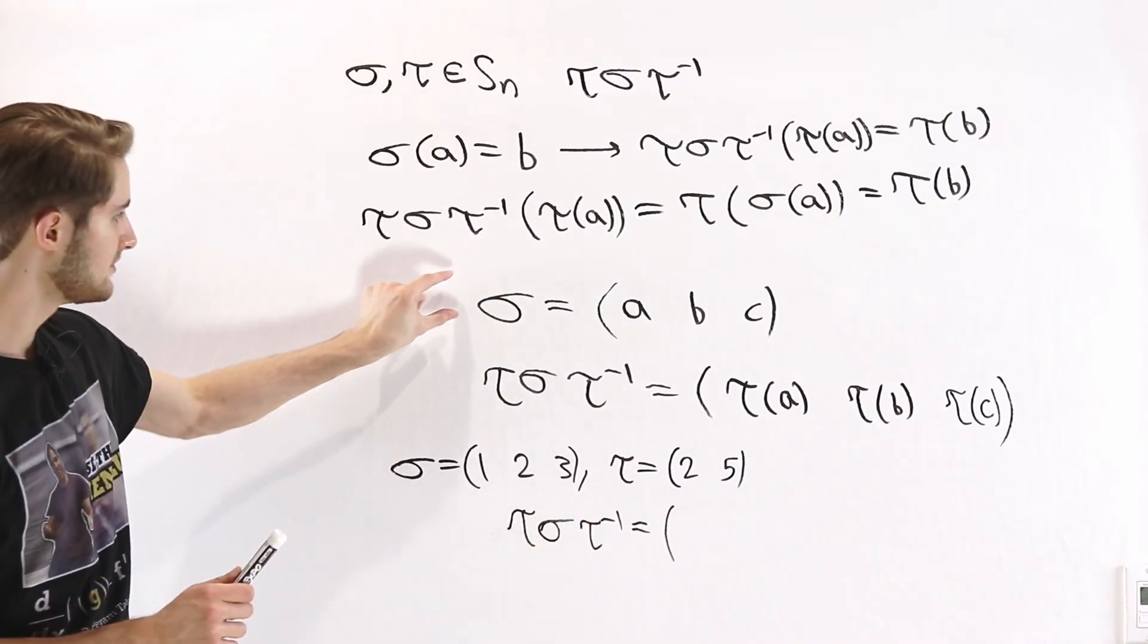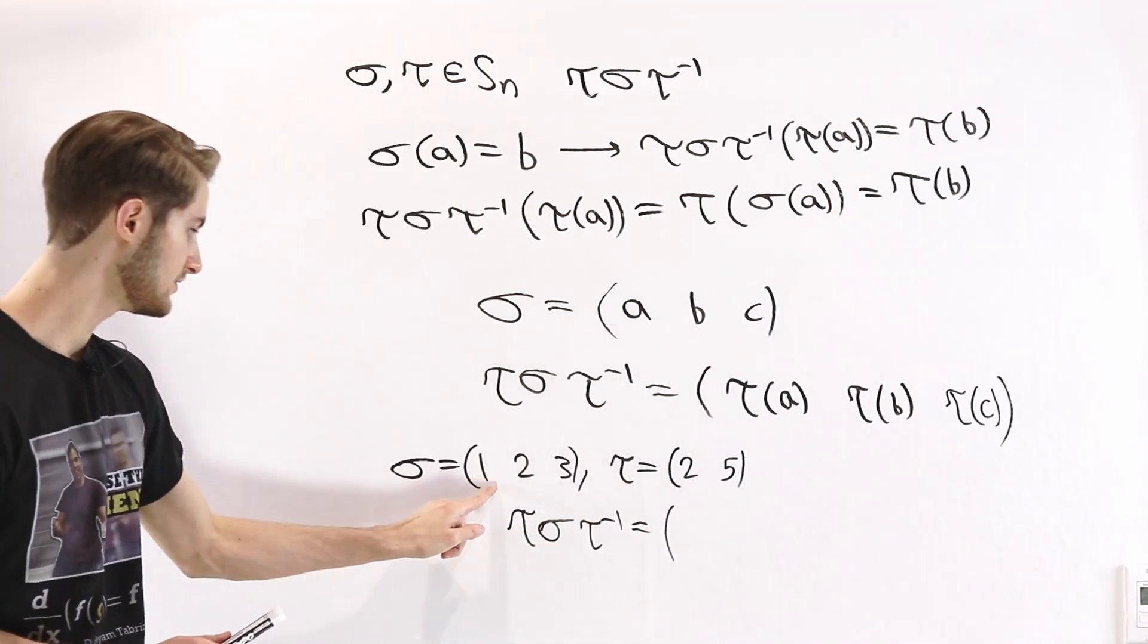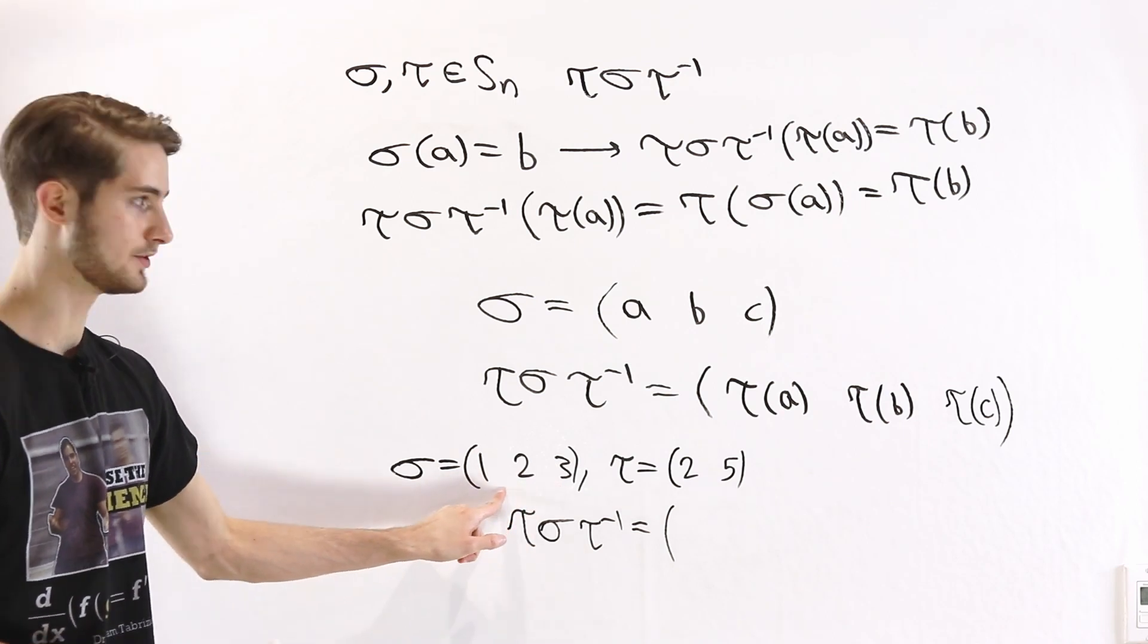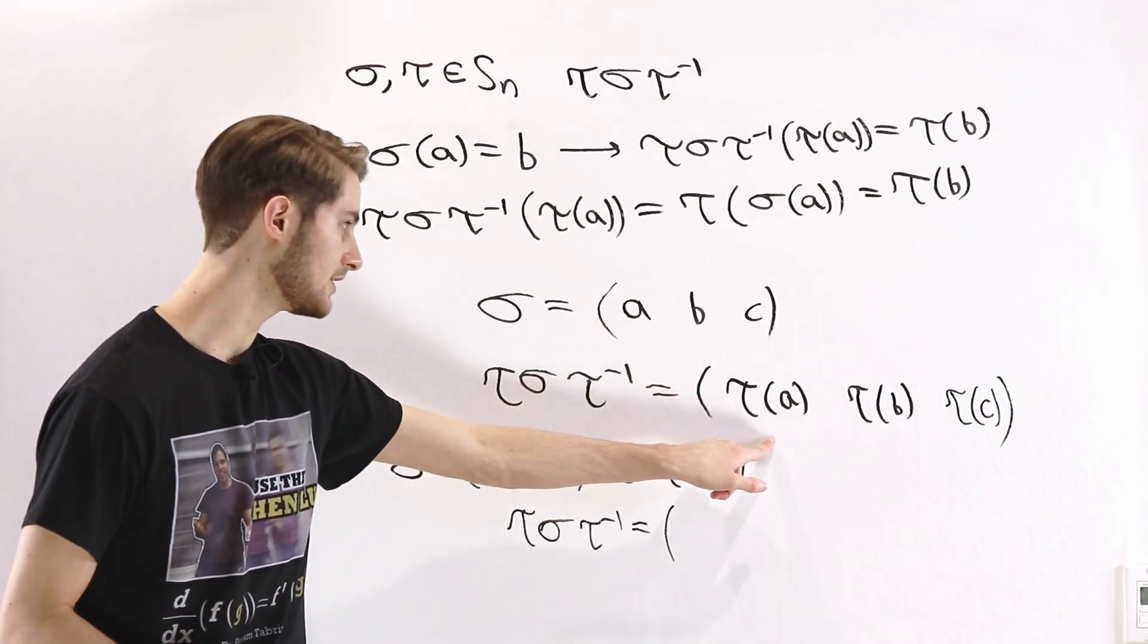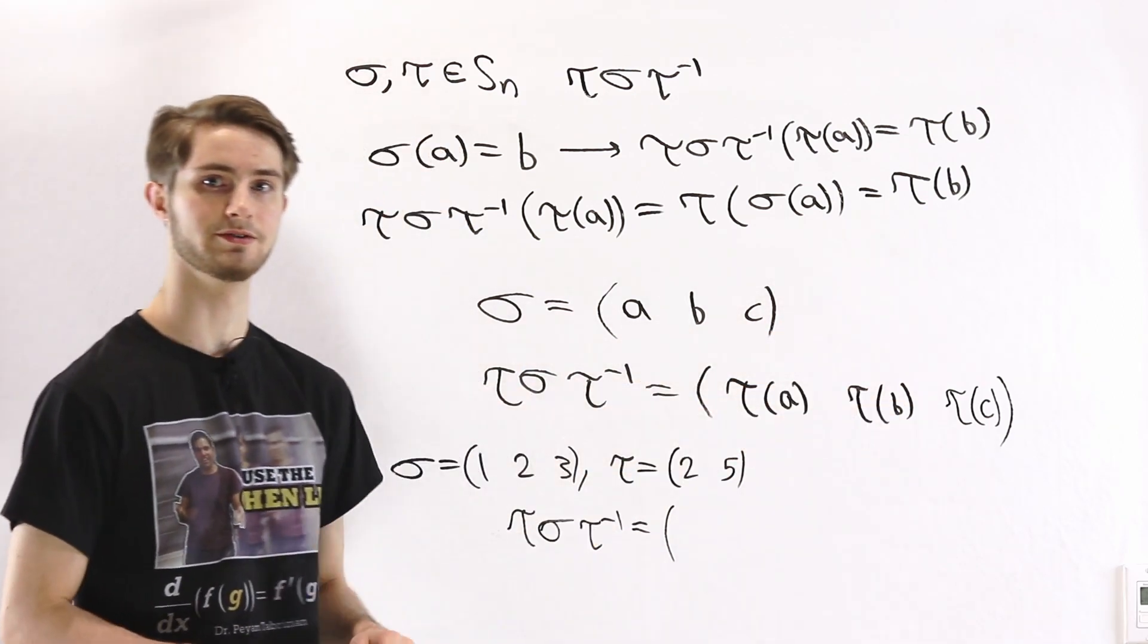In order to get from sigma to the conjugation, all we have to do is take the elements inside of this cycle and replace A with tau of A, B with tau of B, and C with tau of C.